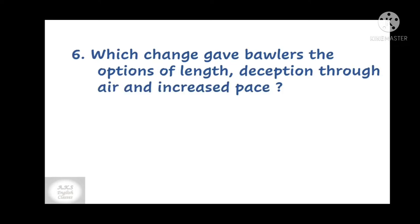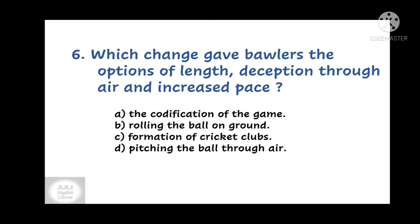Question number 6. Which change gave bowlers the option of length, deception through air, and increased pace? Options: A. The codification of the game, B. Rolling the ball on ground, C. Formation of cricket clubs, or D. Pitching the ball through air.